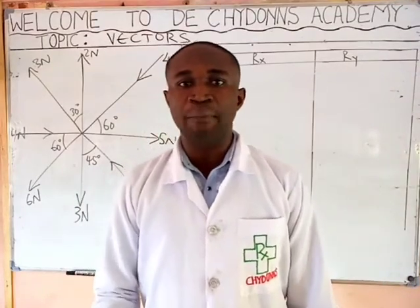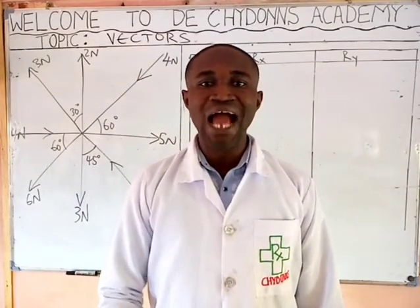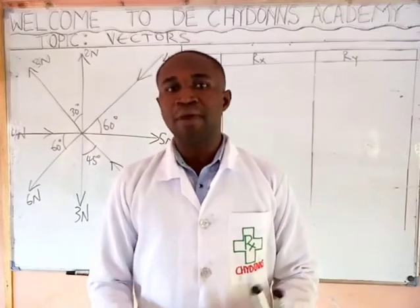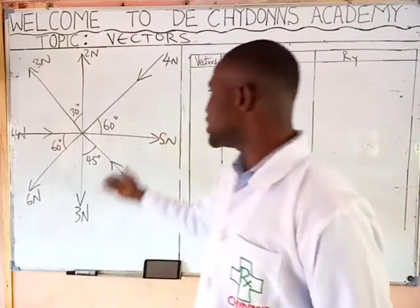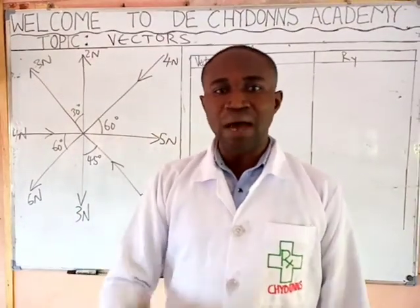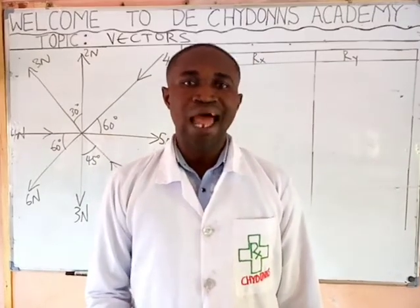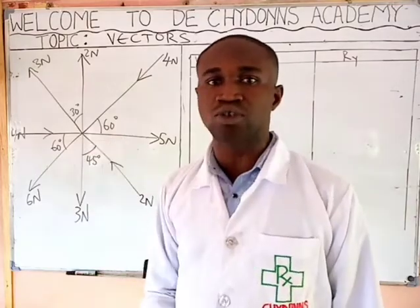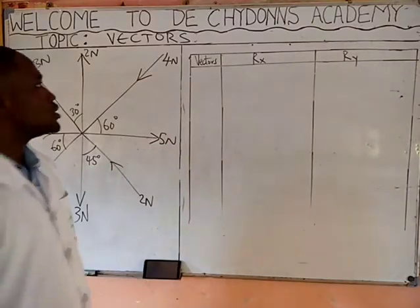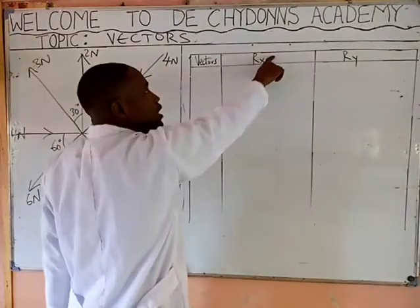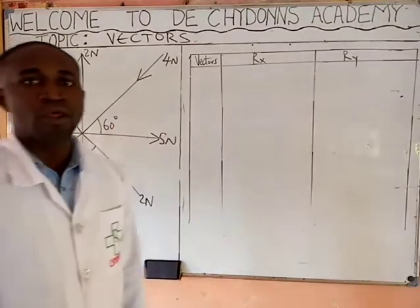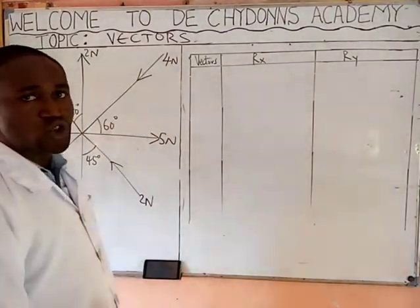To continue with the topic of vectors, we want to see how to resolve a given vector. No matter how it looks or how big it is, you can resolve it perfectly well using the tabular method. To resolve vectors using this method, draw your table with one column for the vectors, one for the horizontal component, and one for the vertical component.